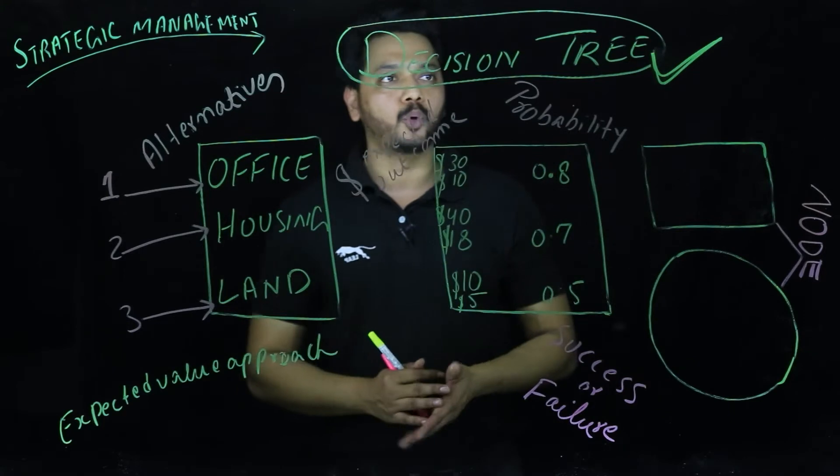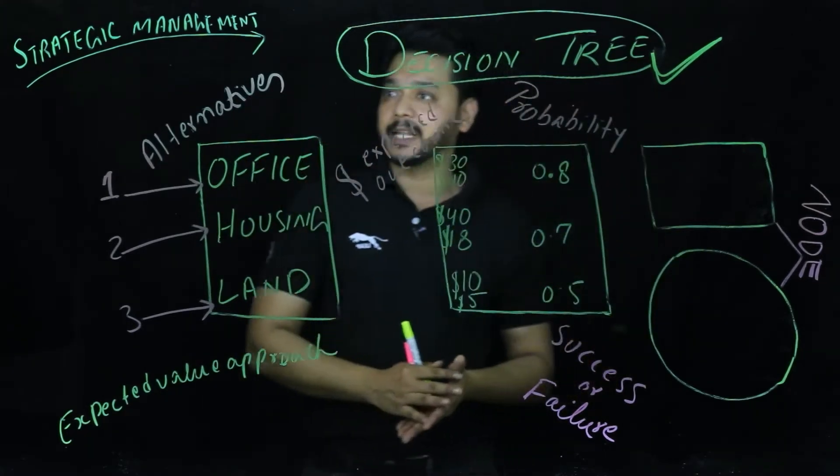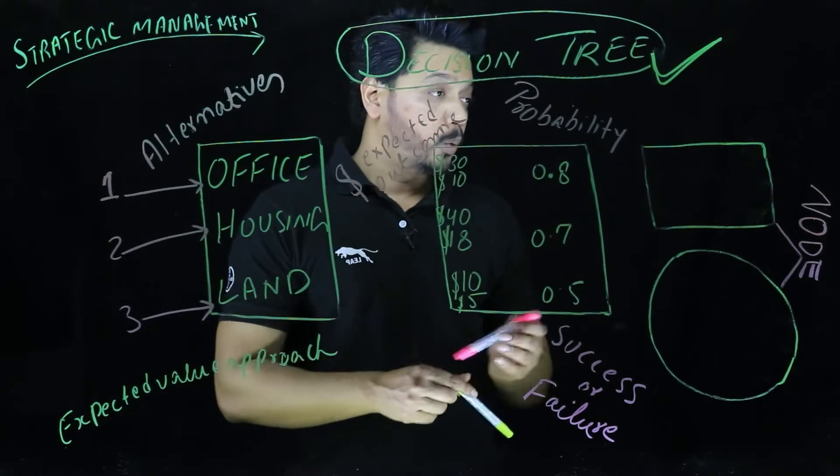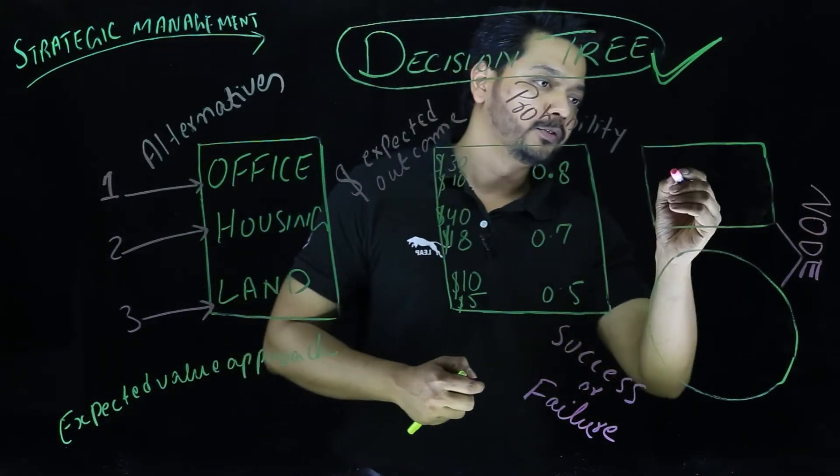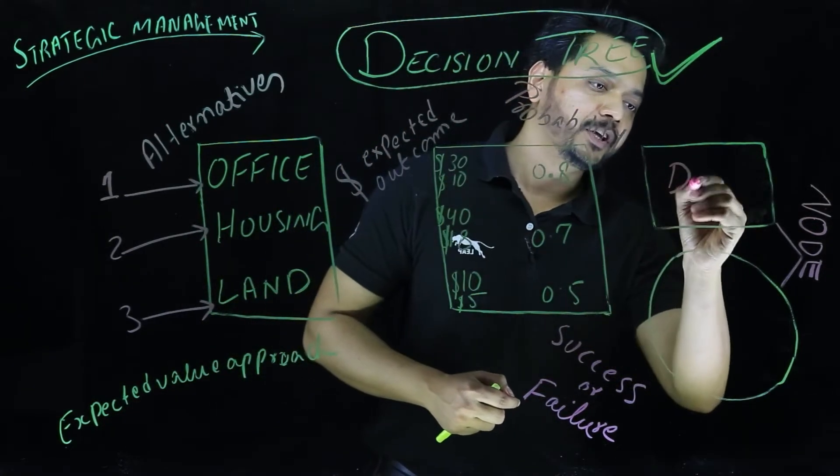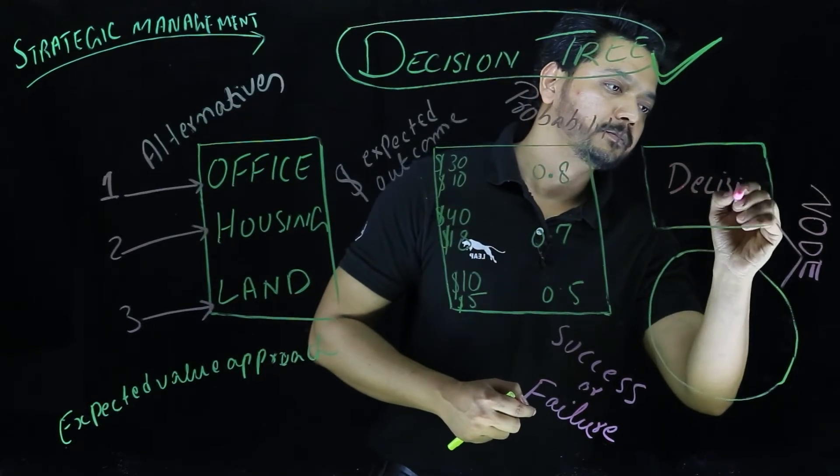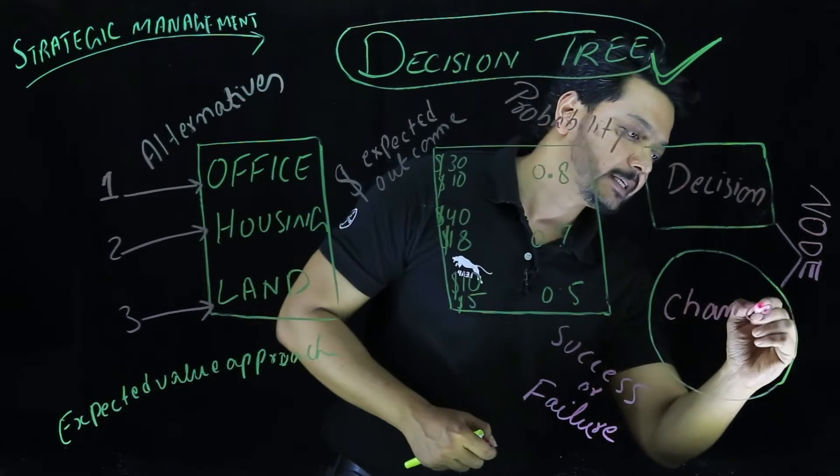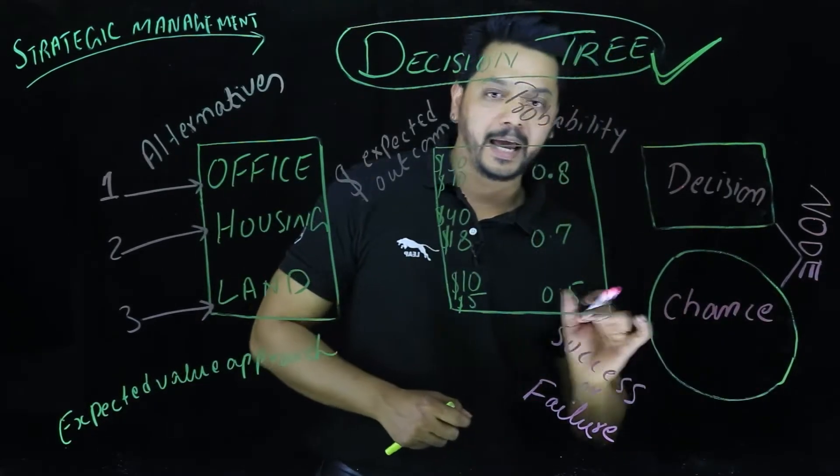If we go through this analysis, the structure of this analysis technique, we have got nodes. One node would be of decision. This node represents a node of chance.